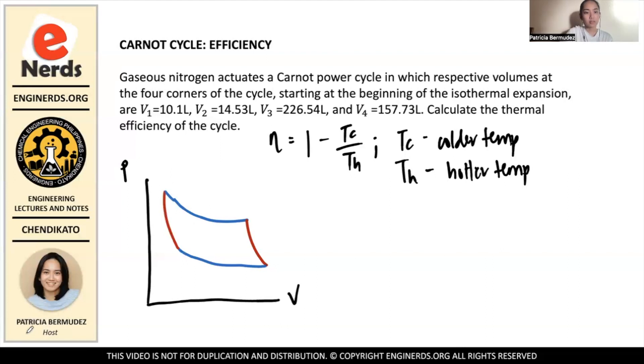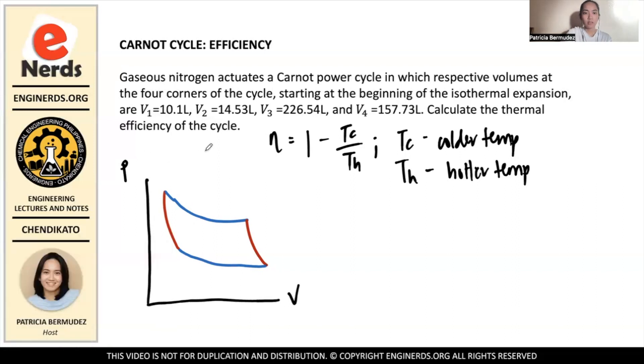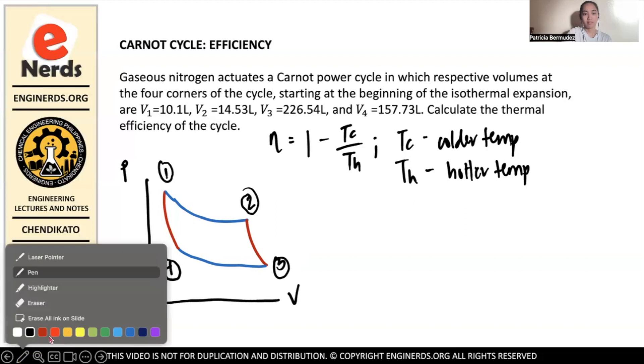And then after that, it undergoes adiabatic compression. And that is the four processes in a Carnot cycle. And then this corner is the first stage. And then after that, it goes to point two, then corner three, and then corner four. And then it goes back to corner one.